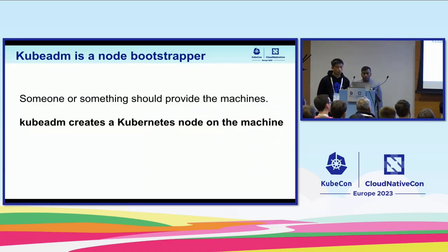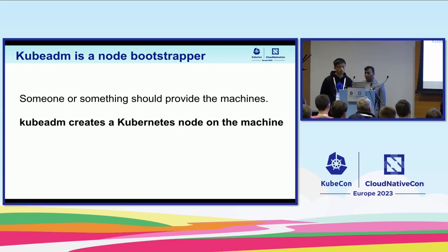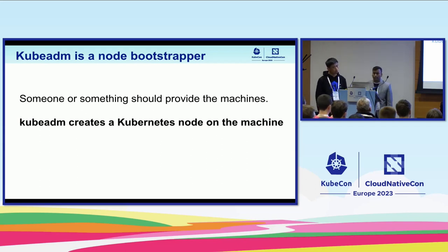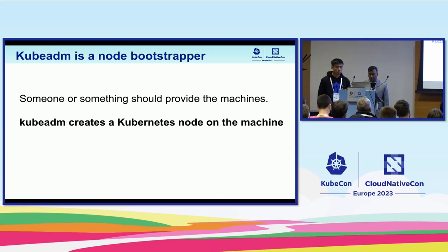Kubeadm is a node bootstrapper. Someone or something should provide the machine. Kubeadm creates a Kubernetes node on the machine, so kubeadm doesn't provision a machine for you. You need to provision the machine yourself, but beforehand you need to install kubelet and container runtimes on the machine. You also need to install the CRI and CNI on the machines. And it is kind of agnostic to infrastructure, CNI, and CSI as well.